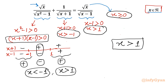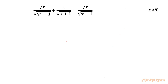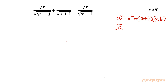If we get a value of x that is negative, that solution will be rejected. Now let us begin solving the problem. I will write the first algebraic identity: a squared minus b squared equals (a plus b)(a minus b). I will also use the radical property: square root of a times square root of b equals square root of ab.